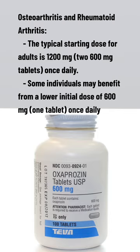Osteoarthritis and rheumatoid arthritis: The typical starting dose for adults is 1,200 mg (two 600 mg tablets) once daily. Some individuals may benefit from a lower initial dose of 600 mg (one tablet) once daily.